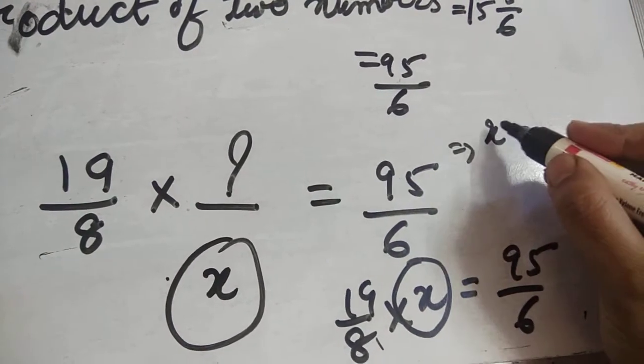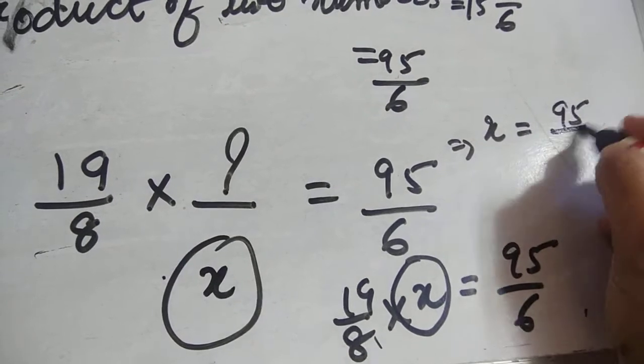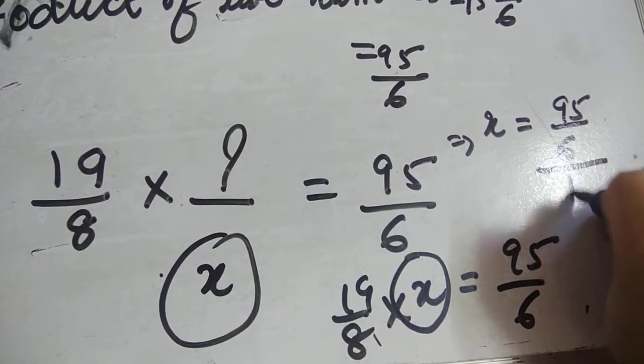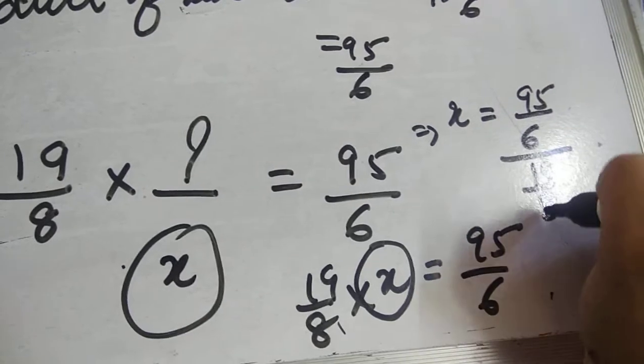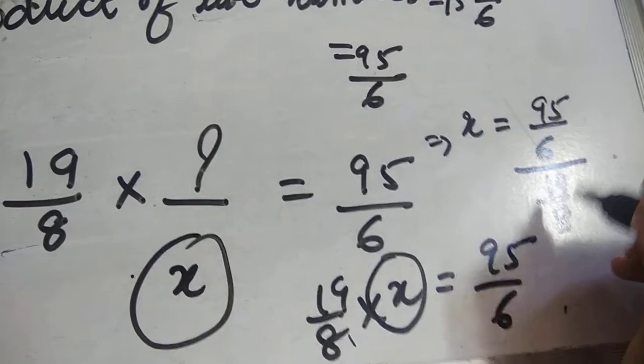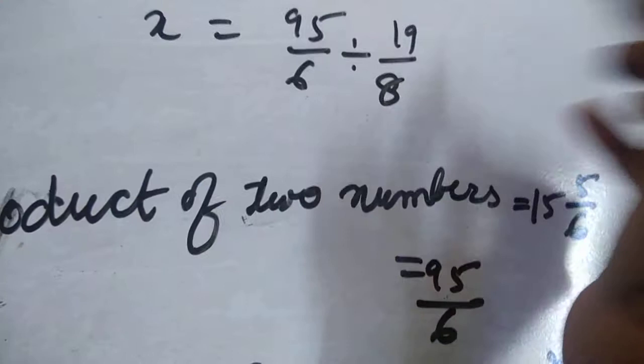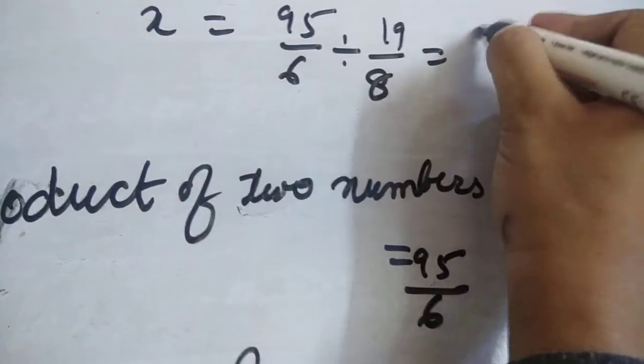So 95/6 divided by 19/8. The reciprocal of this number is X equals to 95/6 multiplied by 8/19. We have to take the reciprocal.